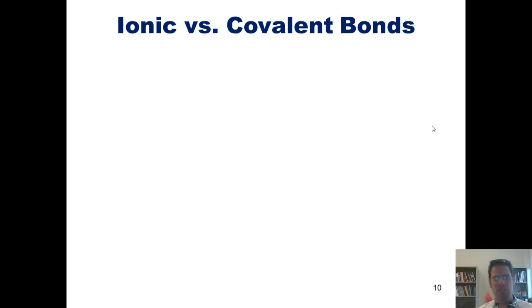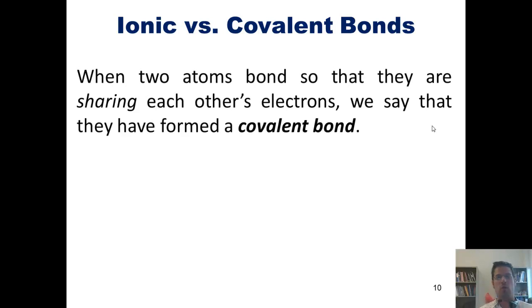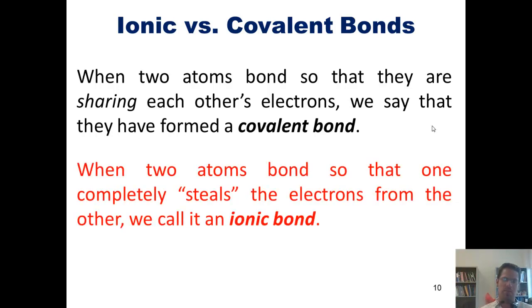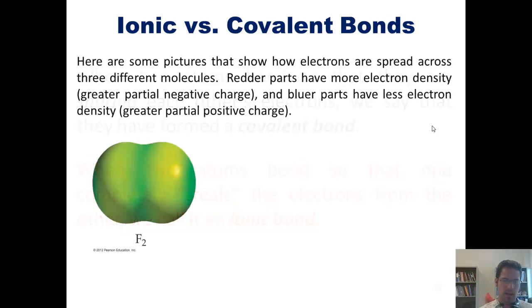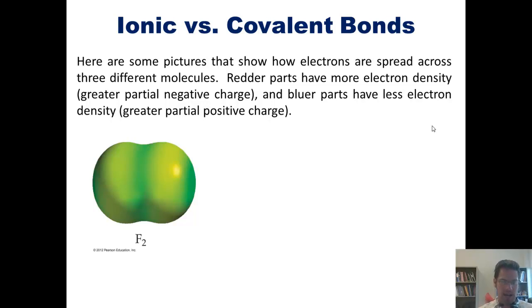I'd like to start by reviewing the difference between ionic and covalent bonds. When two atoms bond so that they share each other's electrons, we say that they have formed a covalent bond. When two atoms bond so that one completely steals the electrons from the other, we call it an ionic bond. Here are some pictures that show how electrons spread across three different molecules. Redder parts of those molecules have more electron density — greater partial negative charge there — and bluer parts have less electron density, meaning greater partial positive charge. Our first example, F2, or fluorine gas, is formed when two individual fluorine atoms bond together and share their electrons, forming a covalent bond with even sharing.